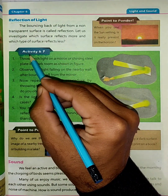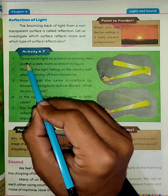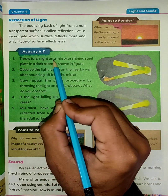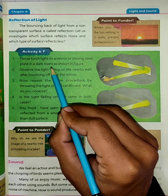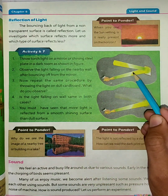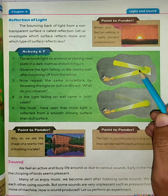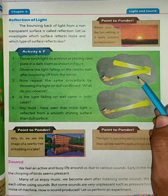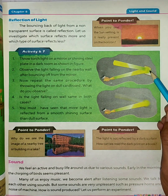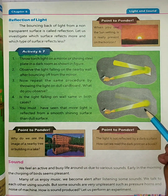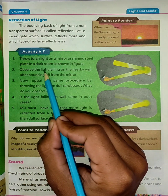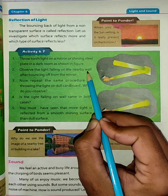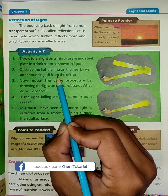Activity 6.7: Throw a torchlight on a mirror or a shiny steel plate in a dark room. Observe the light falling on the nearby wall after bouncing off from the mirror.